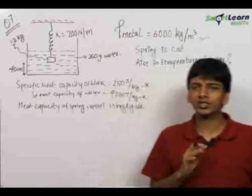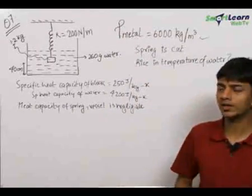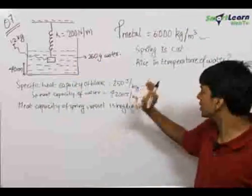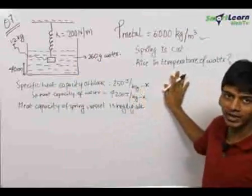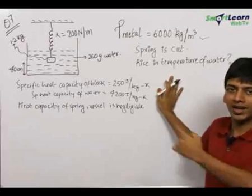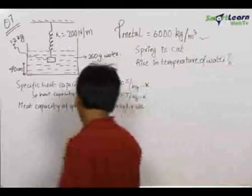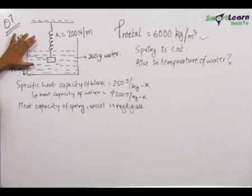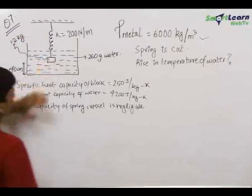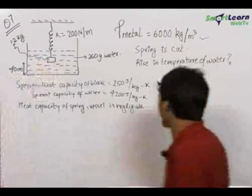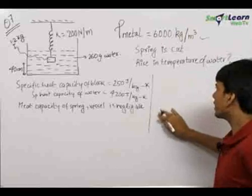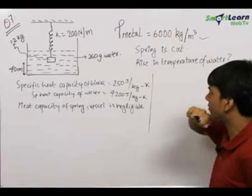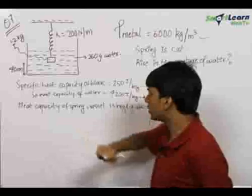The first assumption to make here is that all of the energy lost in the system is converted into heat, which is used to raise the temperature of the system. For that, let us find out the initial energy of the system which is lost from the initial state to the final state. Initially, the system had potential energy stored in the spring and potential energy stored in the block.